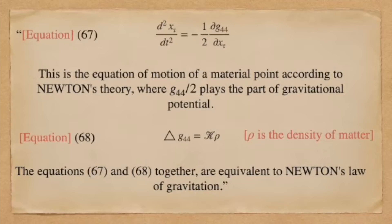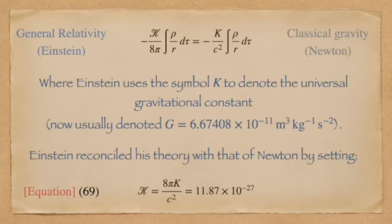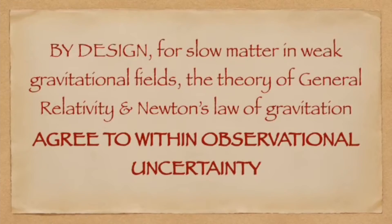In Einstein's own words, equations 67 and 68 together are equivalent to Newton's law of gravitation. Finally, in equation 69, Einstein secures agreement between general relativity and Newtonian theory for this case by using the universal gravitational constant to define his free parameter curly k. So it is apparent from the 1916 paper that Einstein designed general relativity to exactly coincide with Newtonian theory for terrestrial systems.